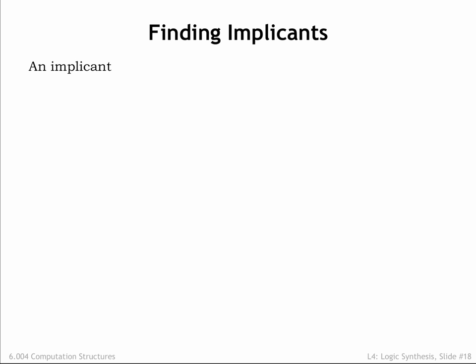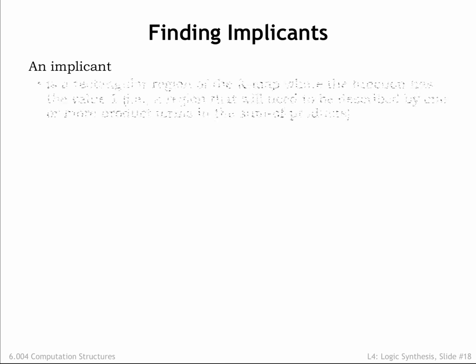So why talk about K-maps? Because patterns of adjacent K-map entries that contain 1s will reveal opportunities for using simpler product terms in our sum-of-products expression. Let's introduce the notion of an implicant, a fancy name for a rectangular region of the K-map where the entries are all 1s. Remember when an entry is a 1, we'll want the sum-of-products expression to evaluate to TRUE for that particular combination of input values.